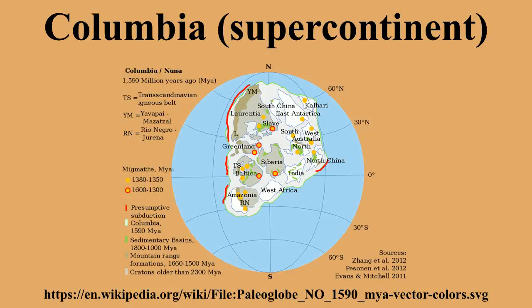Columbia was assembled along global-scale 2.1 to 1.8 Ga collisional orogens and contained almost all of Earth's continental blocks. According to Jawaal 2002, the cratonic blocks in South America and West Africa were welded by the 2.1 to 2.0 Ga Trans-Amazonian and Ibernian orogens. The Kaapvaal and Zimbabwe cratons in southern Africa were collided along the c. 2.0 Ga Limpopo belt.